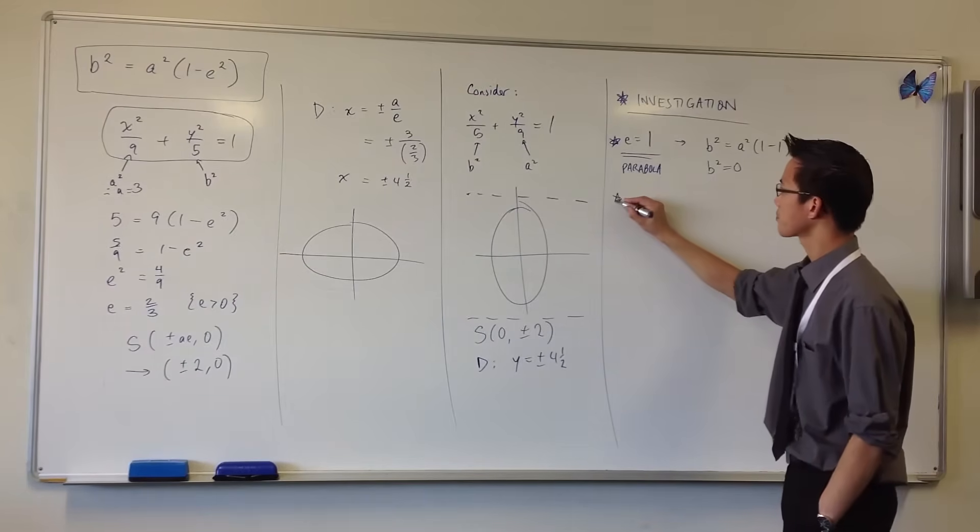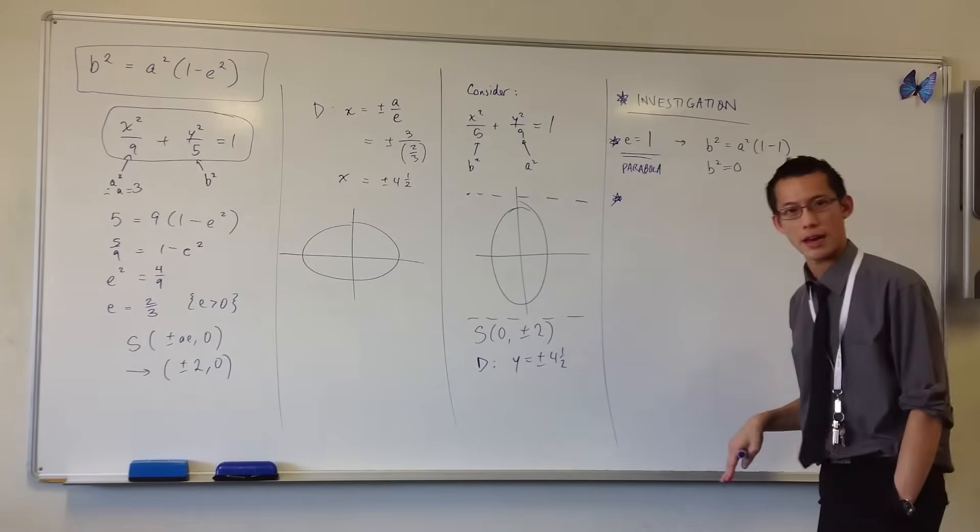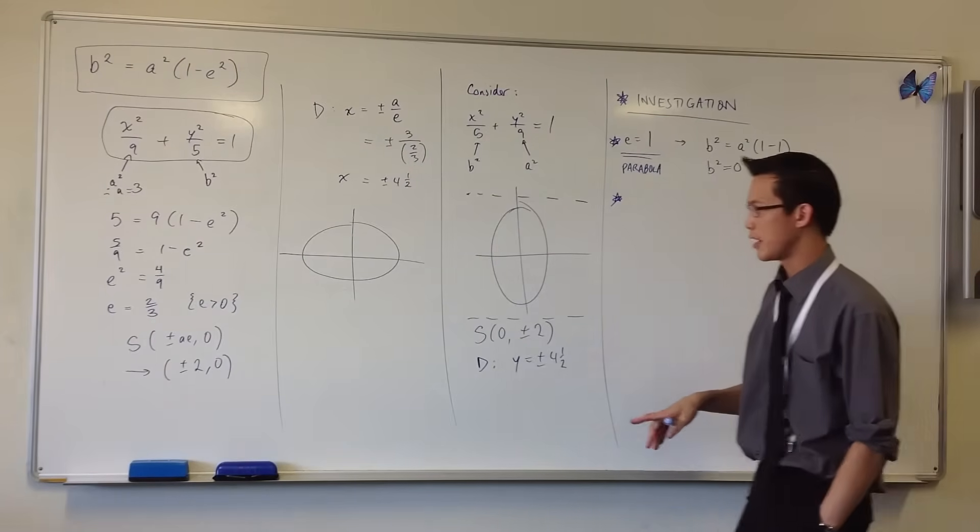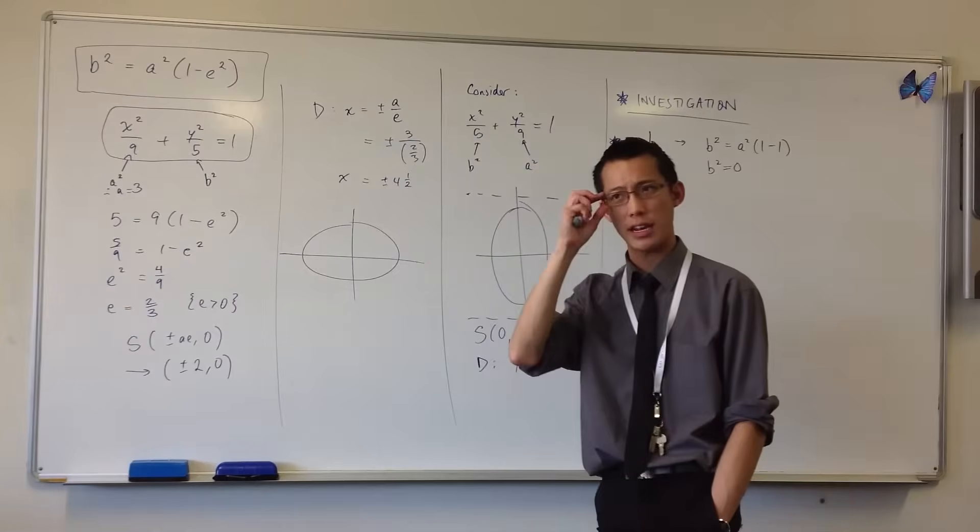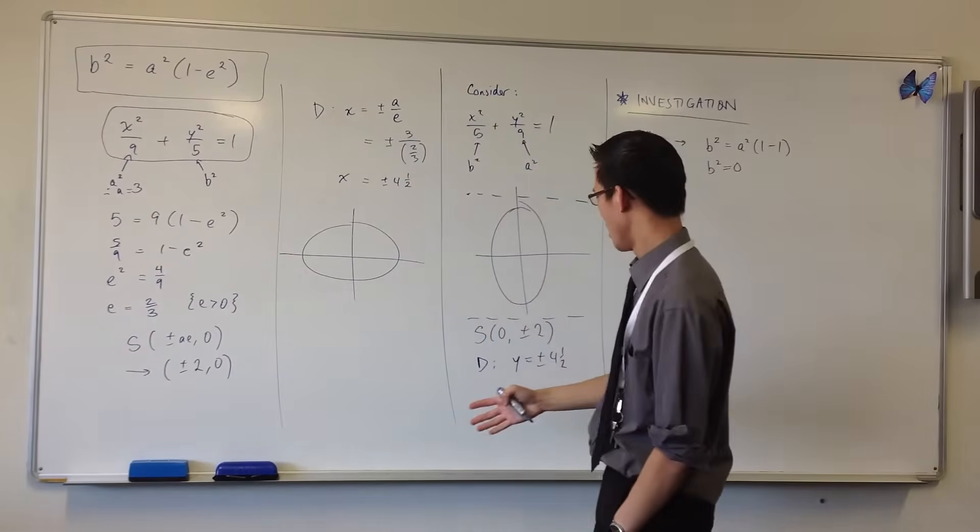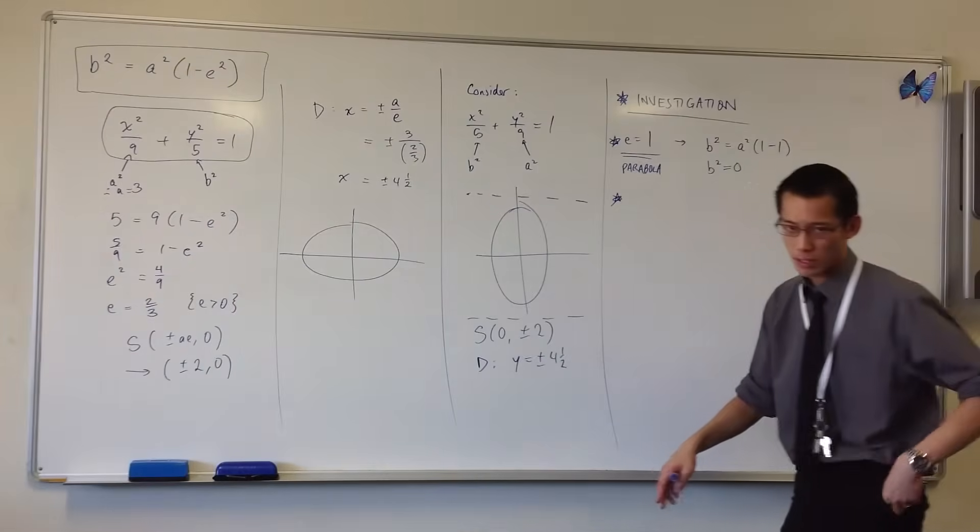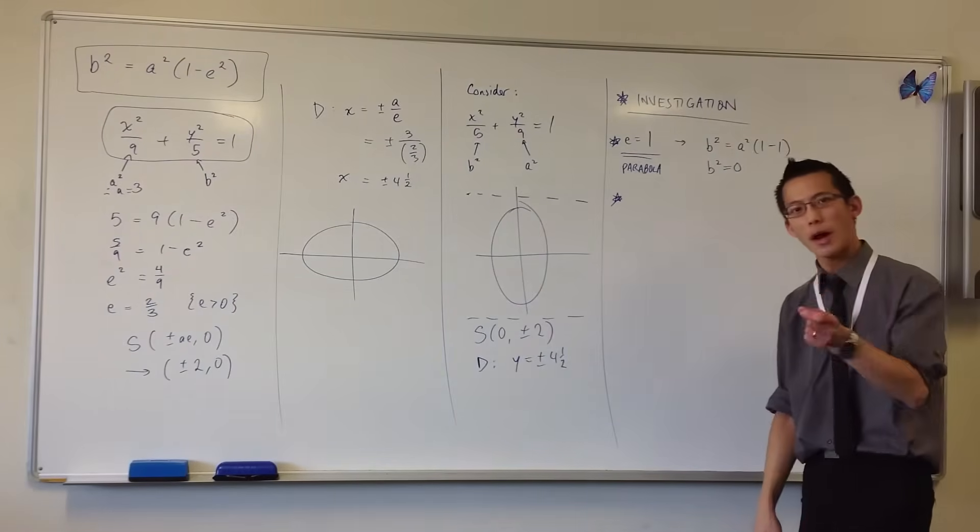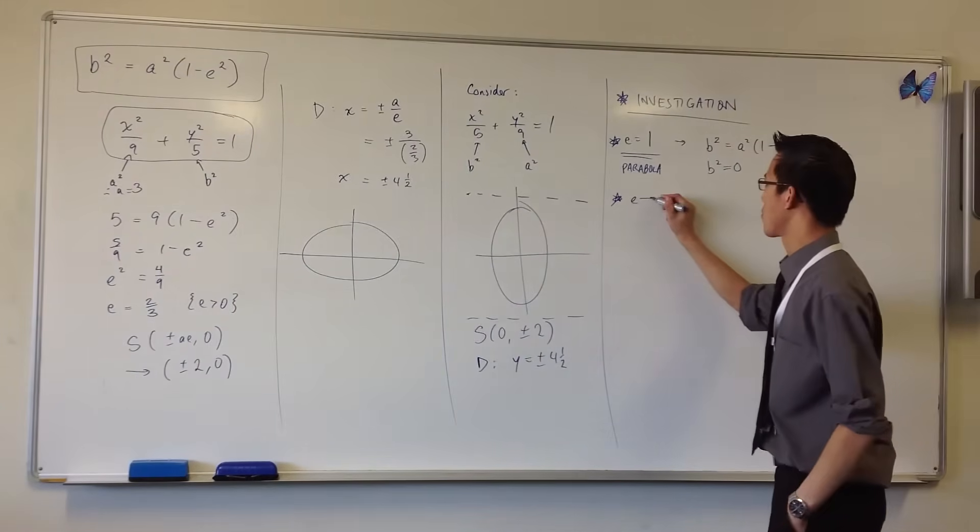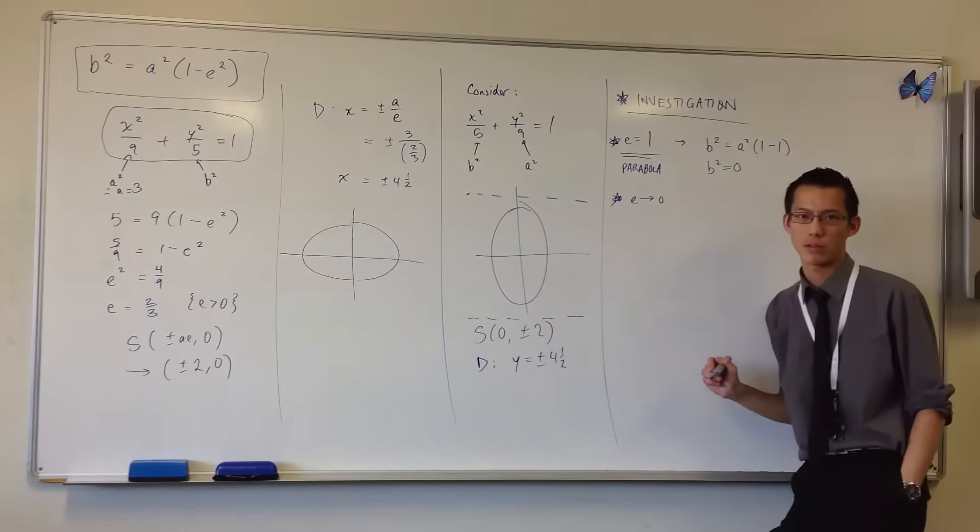All right, that's fine. Well, let's consider then what happens as we reduce the value. Now we already have seen, I think the very first ellipse you considered had an eccentricity of a half. This ellipse has an eccentricity of two-thirds. So we've got all these fractional values. What happens as e approaches zero, as it gets smaller and smaller and smaller?